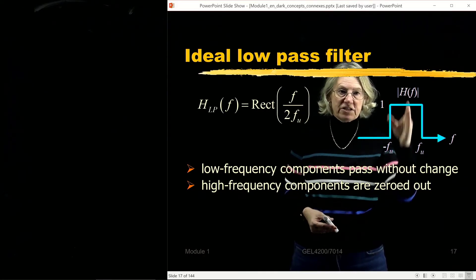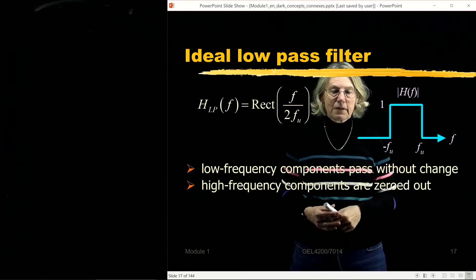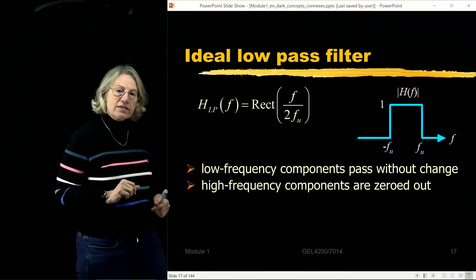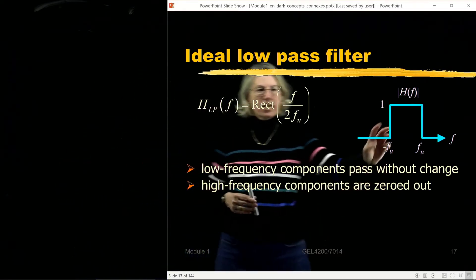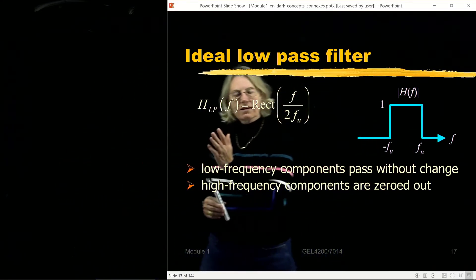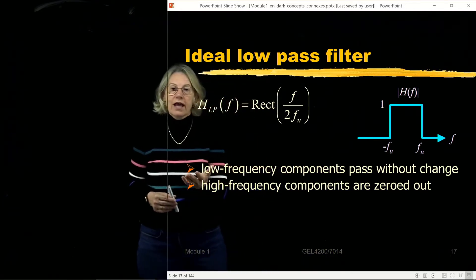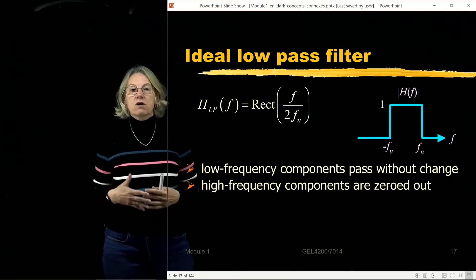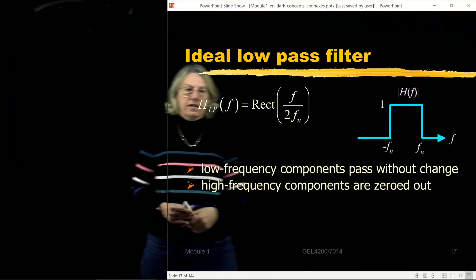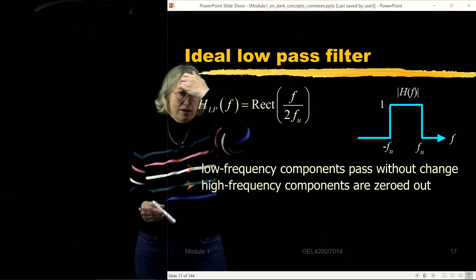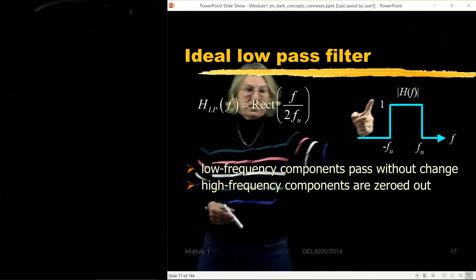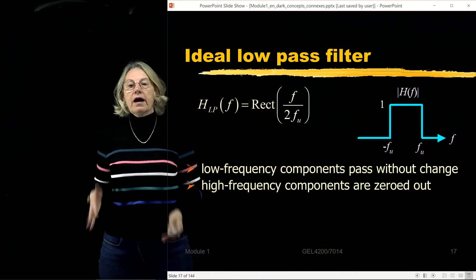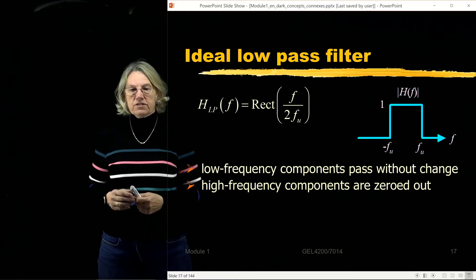The reason we call this a low-pass filter is that in the frequency domain, the low frequencies pass completely unaltered, while anything above the upper frequency fu is completely cut off. It's called ideal because the response is exactly 1 in the passband and there is an infinite slope at the cutoff — no gradual transition.